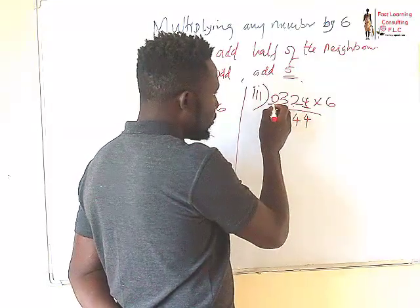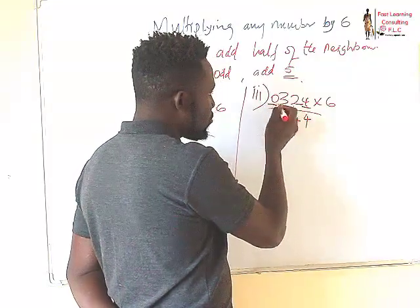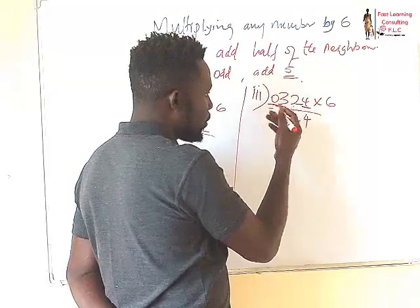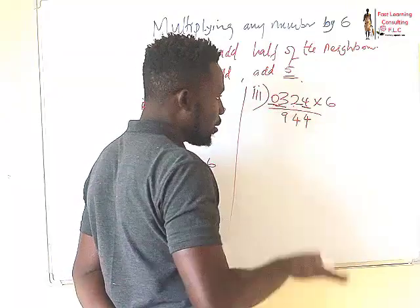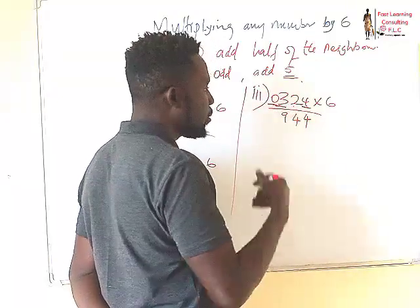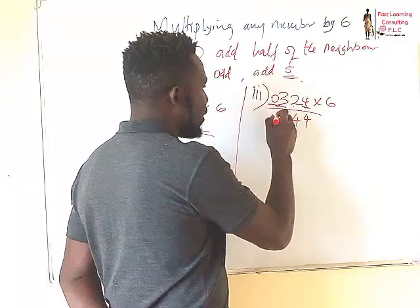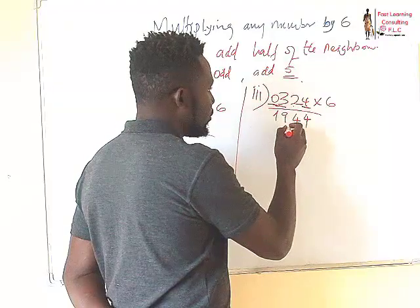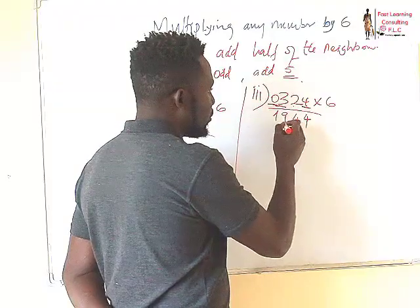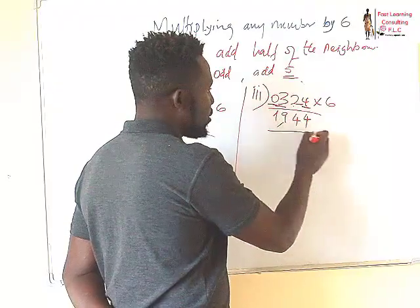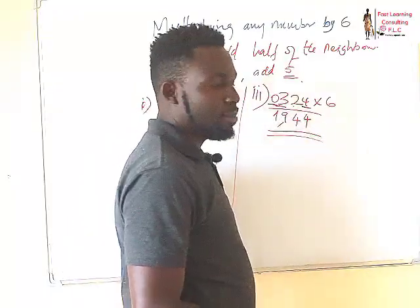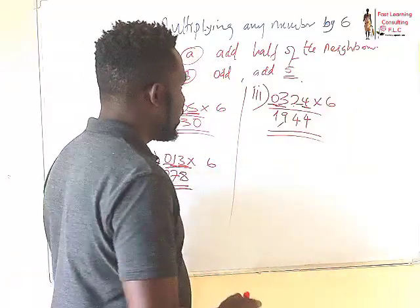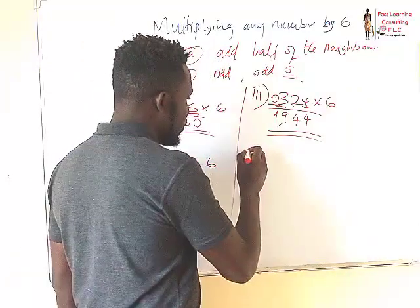Then we have 0, plus half of the neighbor, which is 1.5. We round it down to 1. So our answer is 1,944.